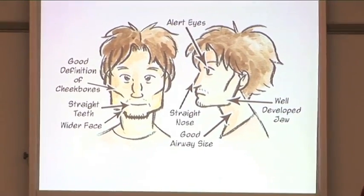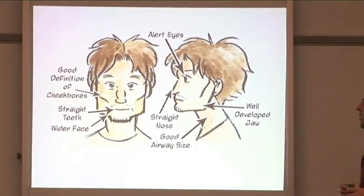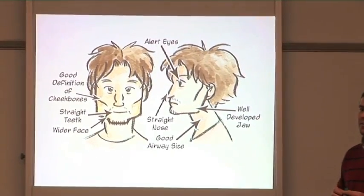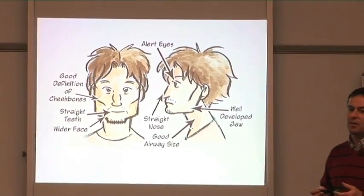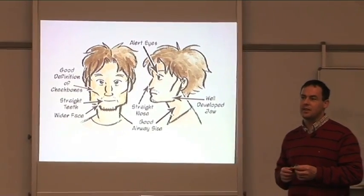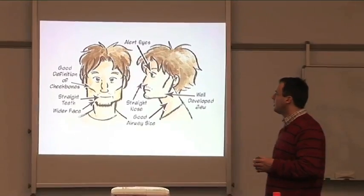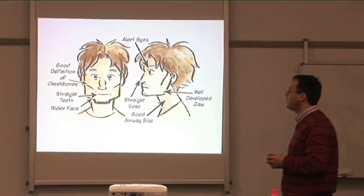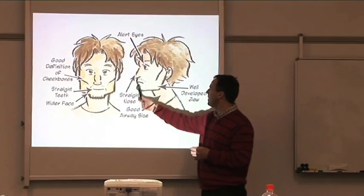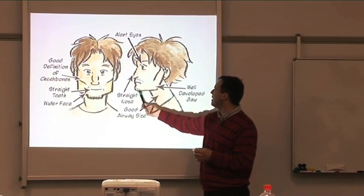This is what we're looking for — this is a caricature or an illustration based on the soccer player in Ireland called Robbie Keane. Look at athletes' faces: you have wide facial structures, good cheekbones, straight teeth, but more importantly we see that the tip of the chin is coming out.